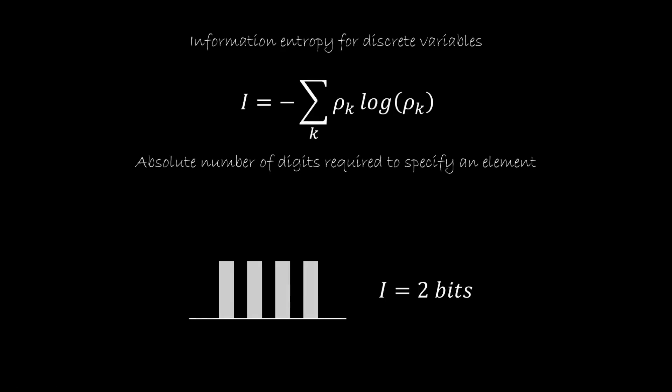The information entropy is easier to understand for discrete variables first. It's this expression, and it gives you the absolute number of digits required to specify an element. So for example, if you have a uniform distribution in four elements, you will need two bits. The first bit to know whether you are on the left side or the right side, and then to know if you are on the first element or the second element.